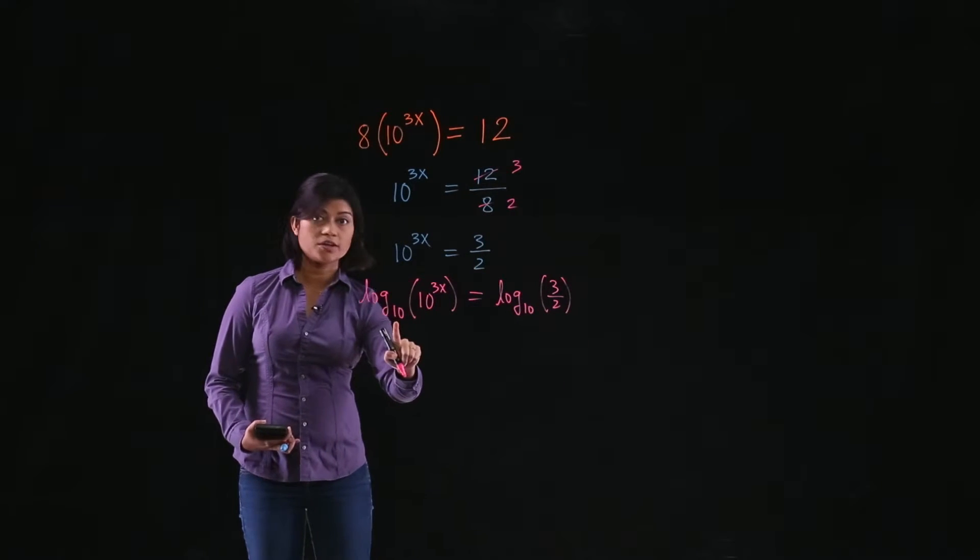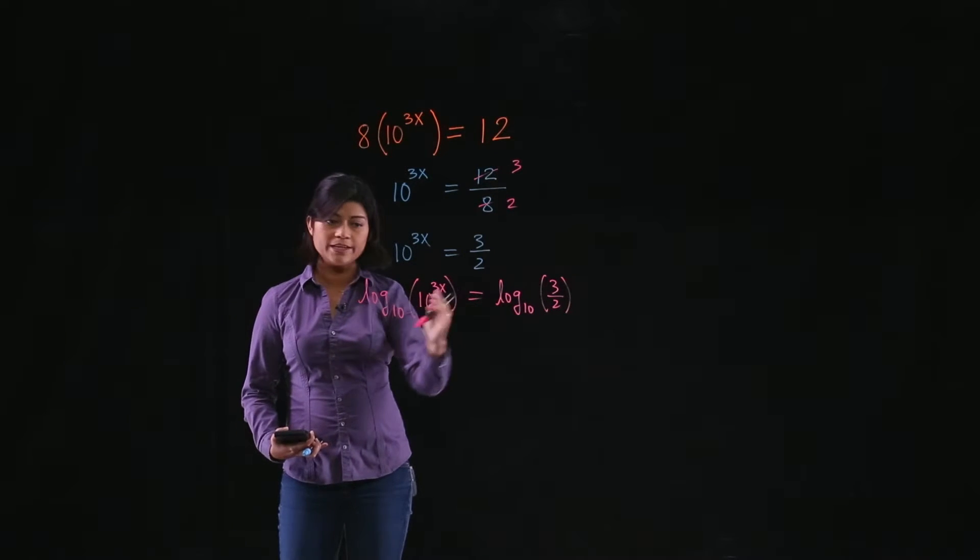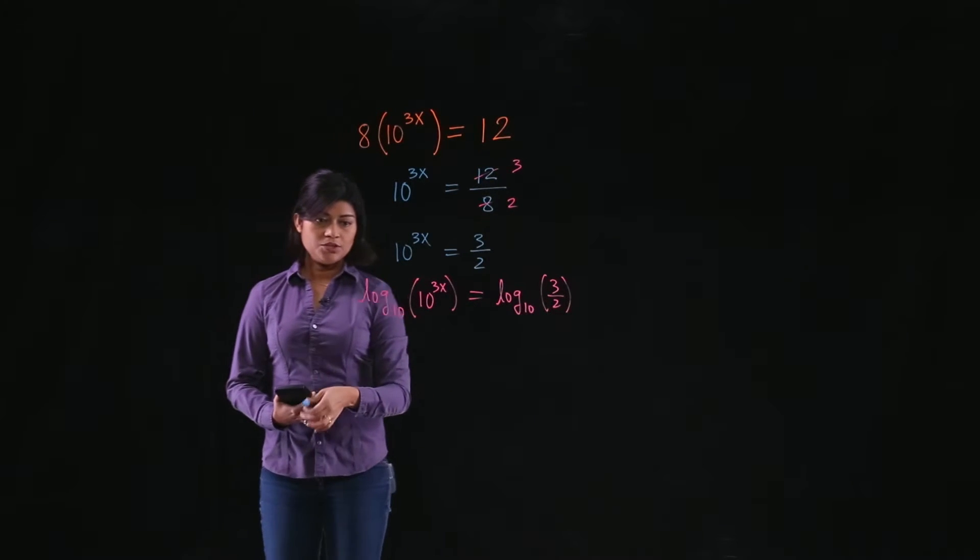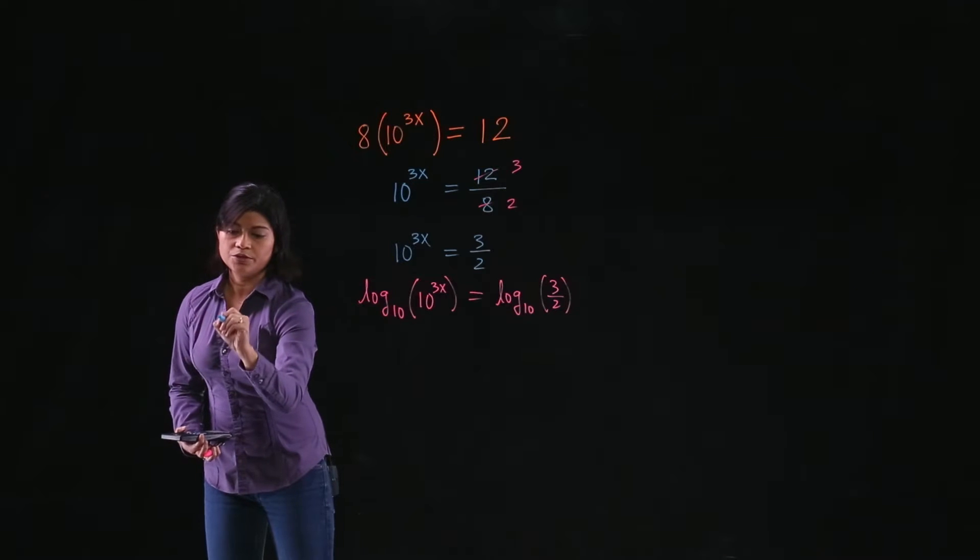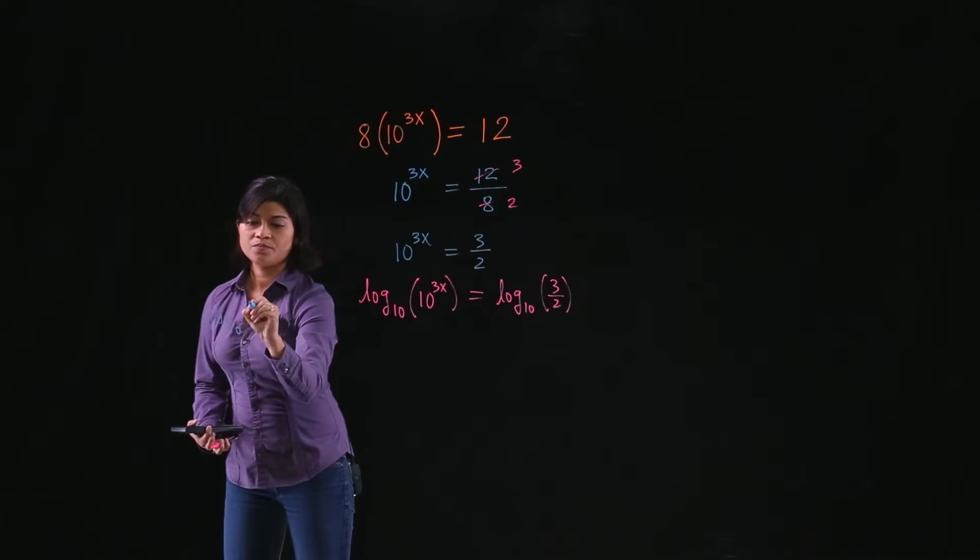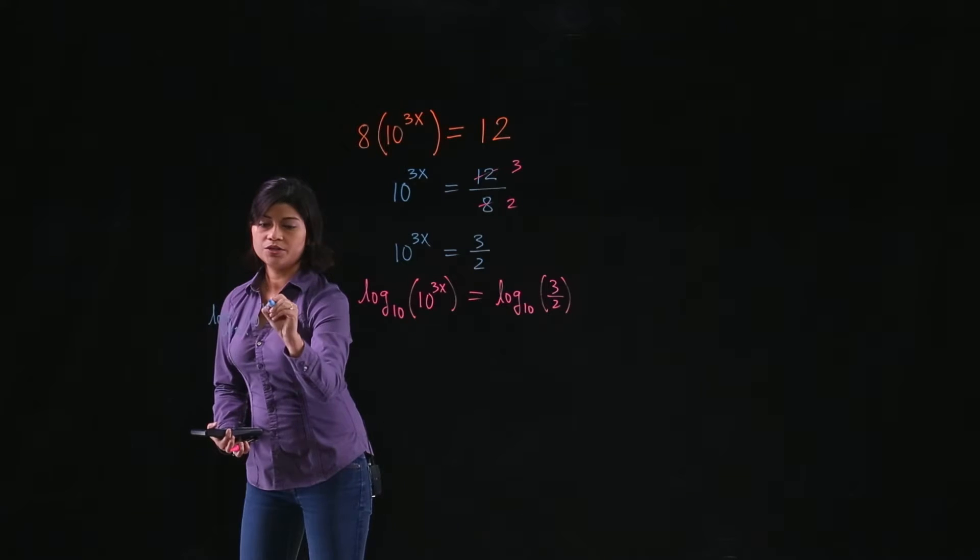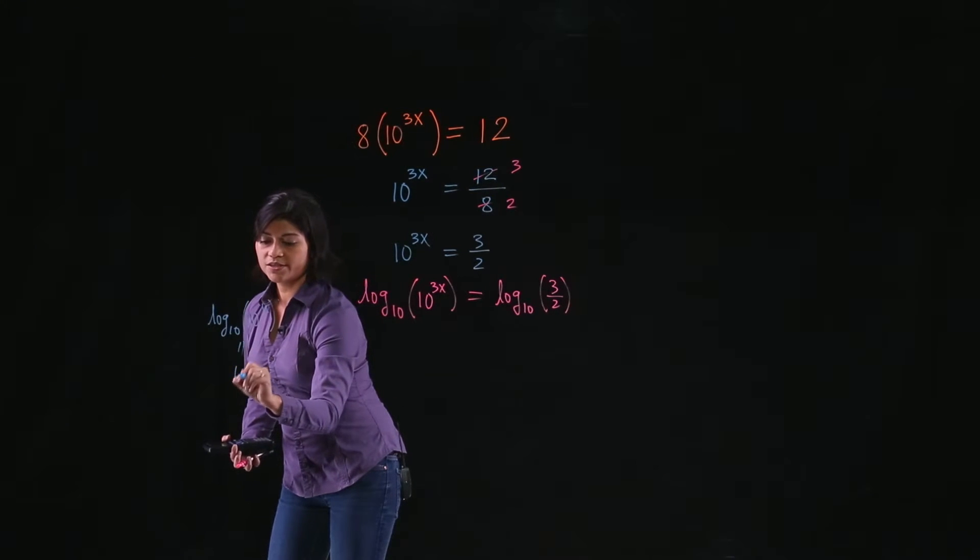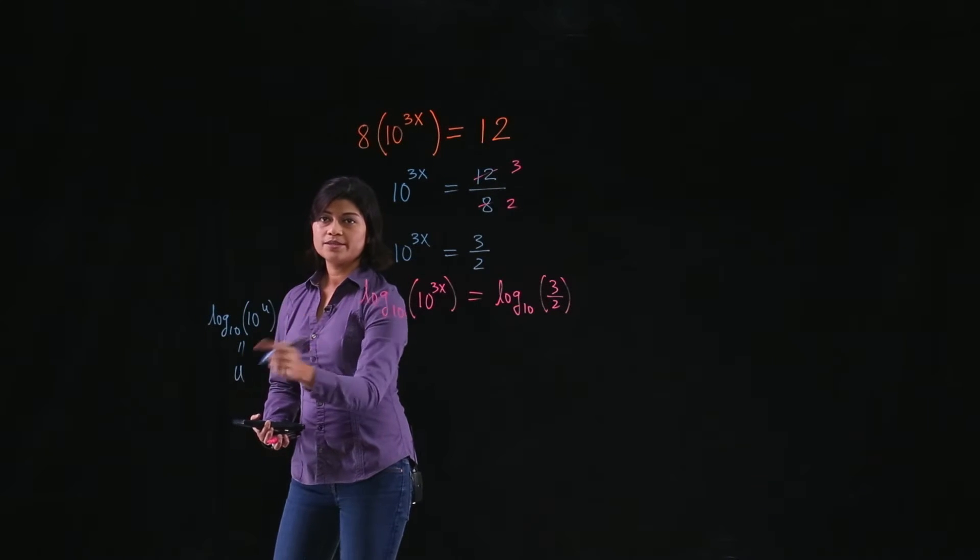And like I said, now logarithm base 10 of 10 to the 3x, you can use this property that when you have log base 10 of 10 to the power u, this is just whatever is in the exponent, u.